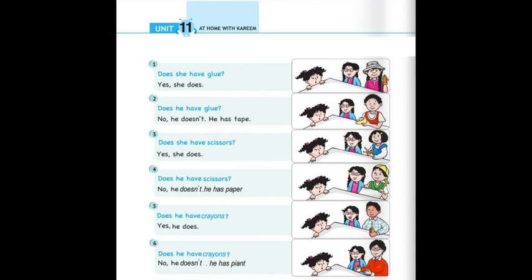Number three: Does he have scissors? Again, when you see does or do, answer with yes or no and make a cross. Yes or no? Yes, yes, she does.